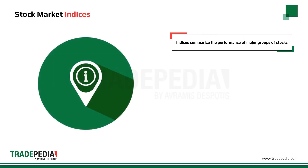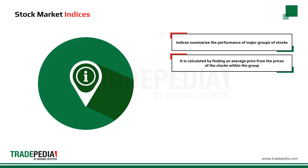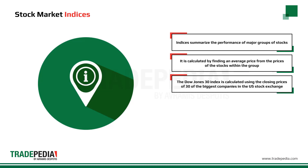Stock market indices summarize the performance of major groups of stocks. They are calculated by finding an average price from the prices of the stocks within the group. For example, the Dow Jones 30 index is calculated using the closing prices of 30 of the biggest companies in the U.S. stock exchange.